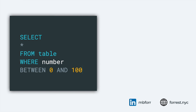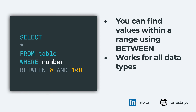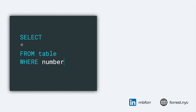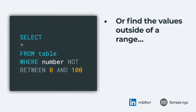BETWEEN is another way to write a conditional. Instead of using greater than 0 and less than 100, you can write WHERE number BETWEEN 0 AND 100. It's a little easier to read. You can use this for dates, strings, or alphabetical ranges — for example, every state between Alabama and Connecticut. NOT BETWEEN returns anything that falls outside of that range, as there's always a reverse way to do this.